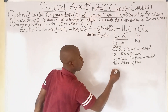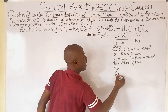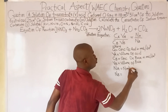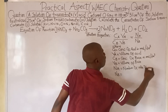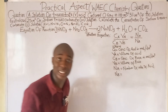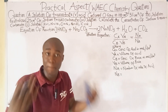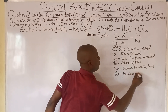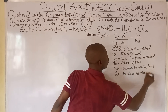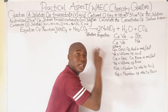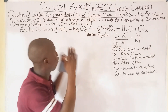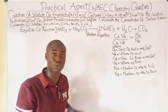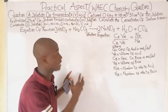Next, nₐ means the number of moles of acid, and nᵦ means the number of moles of base. This equation is something we must take note of when solving questions under titration in chemistry.